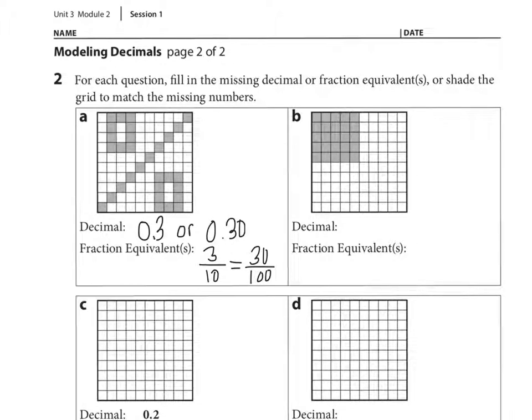For B, how many boxes do we have shaded in? [Counting reveals 25]. So there's twenty-five shaded in out of how many? A hundred total. That's correct.